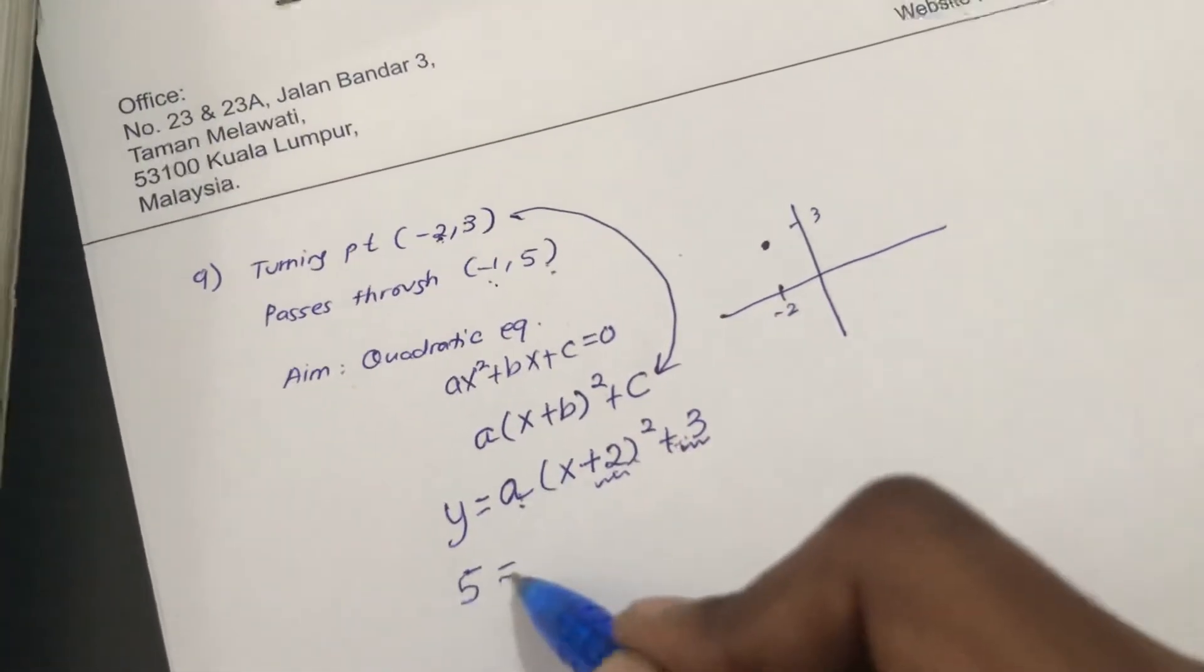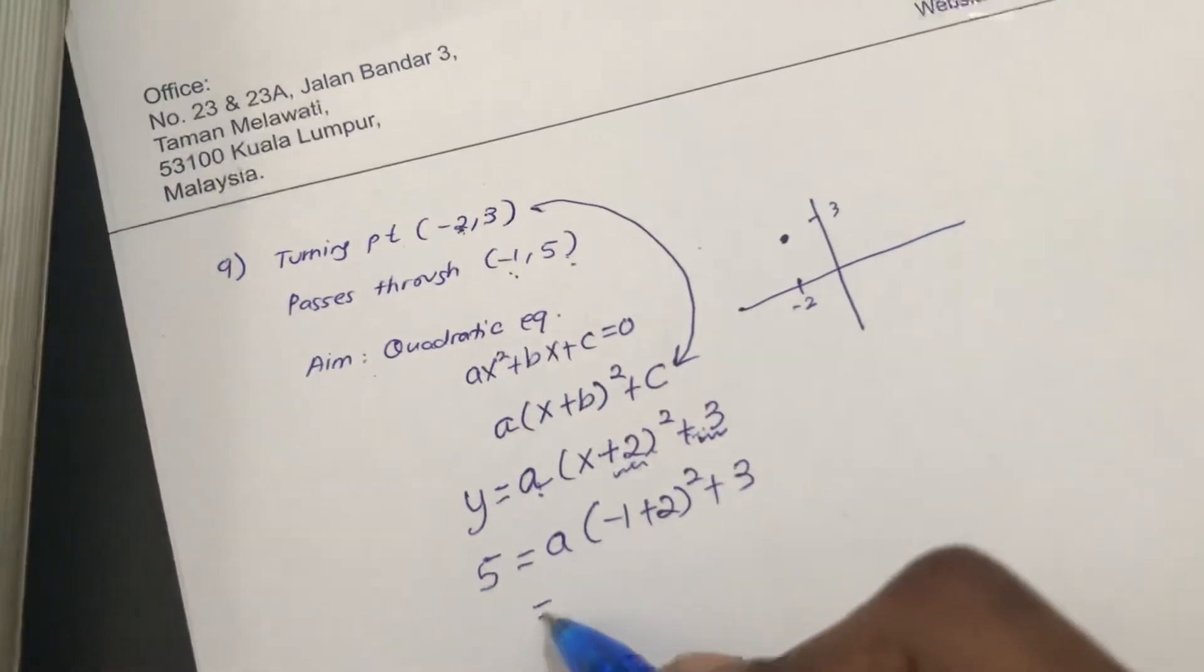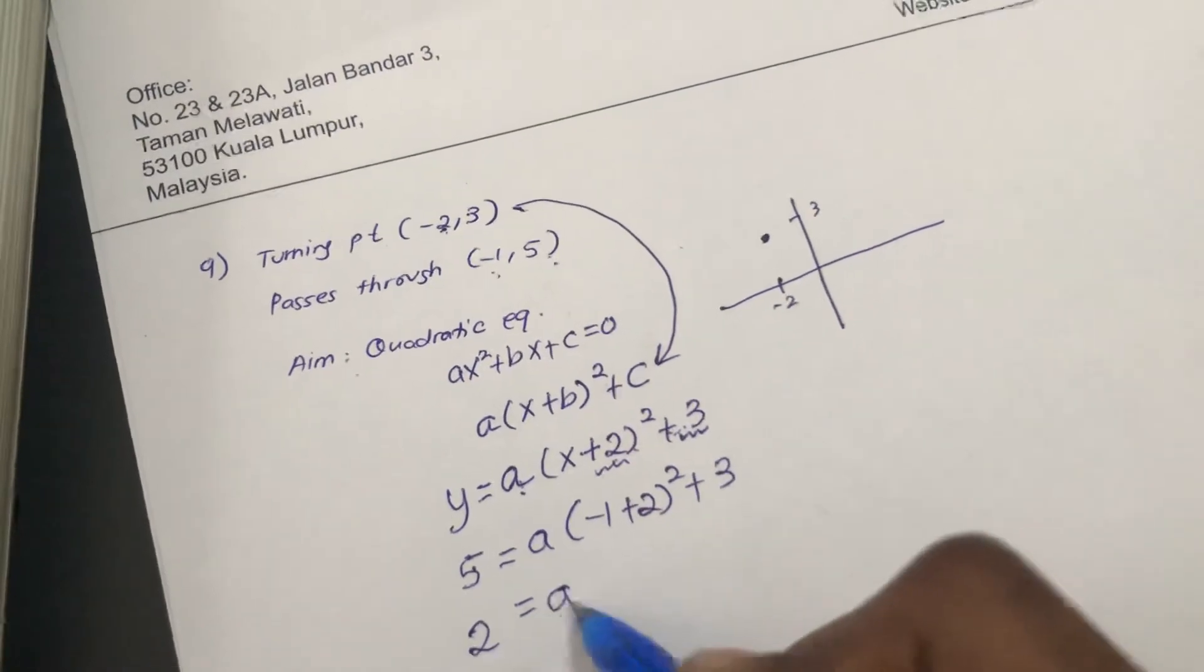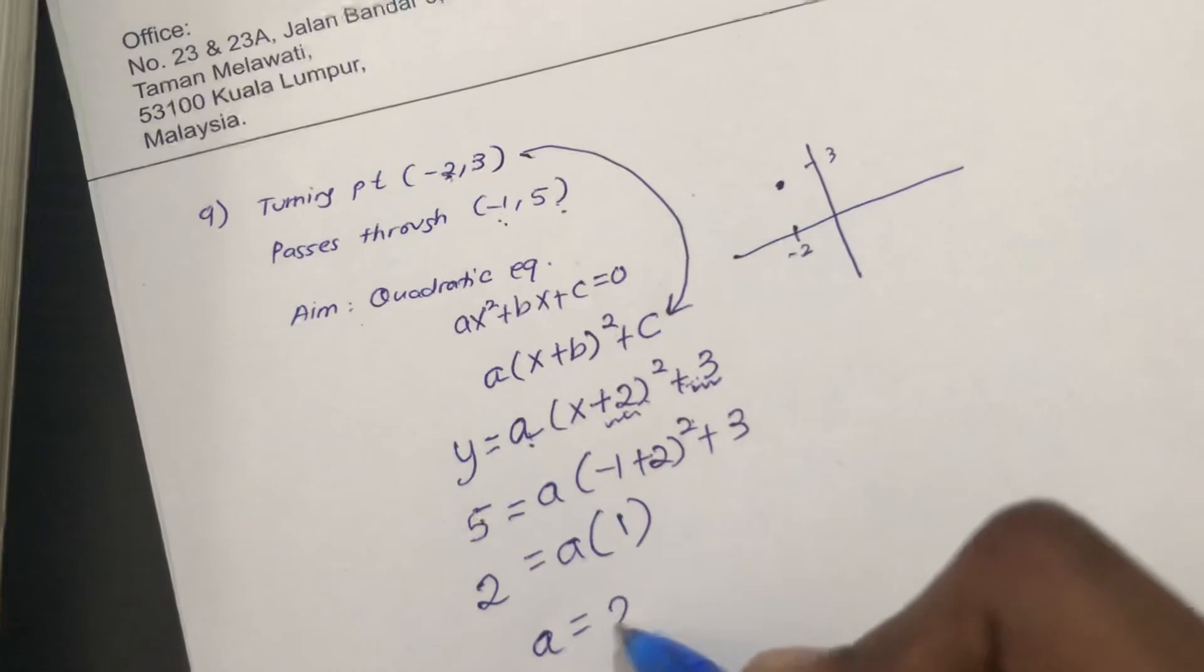5 = a(-1 + 2)² + 3. So you get 5 - 3, you get 2 = a × 1². It is 1. So my a value is 2.